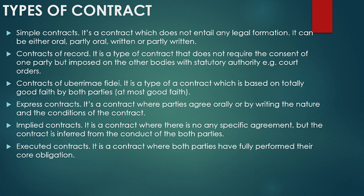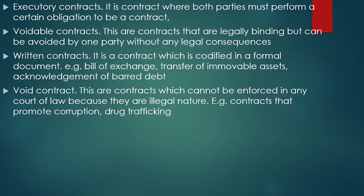An executed contract is a contract where both parties have fully performed their obligations. For example, if you misplace your phone and advertise that whoever returns it will receive a certain amount of money, and somebody finds and returns that phone — you give them the offered amount, and that becomes an already executed contract.